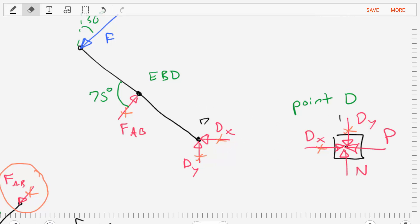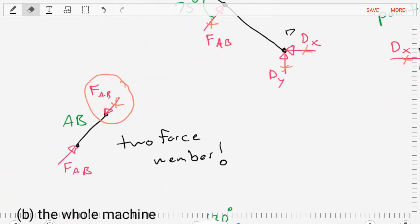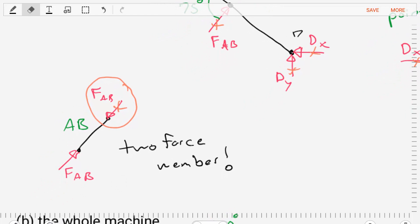Now let's analyze the other member in our structure, which is the short link, AB. The short link, AB, if we remember our rules, we can identify as a two-force member. And that means that the forces that are transmitted through it have a line of action that goes along the member's direction and that the forces at each side are equal and opposite to maintain equilibrium.